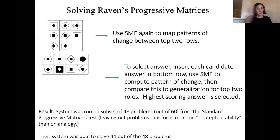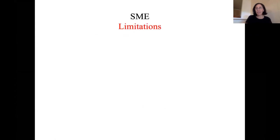The system was run on a subset of the standard progressive matrices tests. They were less interested in programs that focused on what they call perceptual ability rather than analogy. It was impressively able to solve 44 of the 48 problems it was tested on. That's one approach. It has some limitations. I'm going to go through the different approaches and talk a little bit about what I think the limitations are.